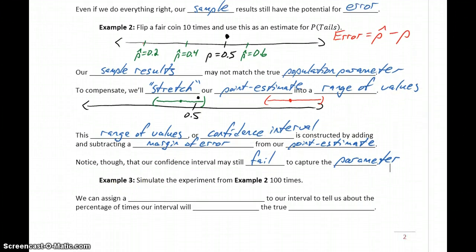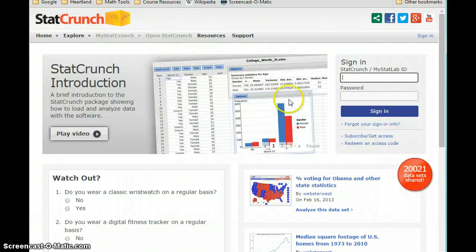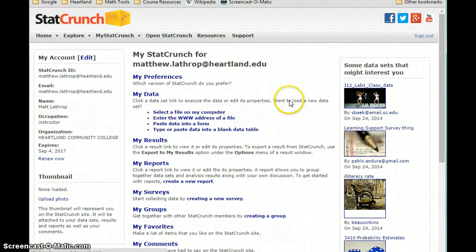In Example 3, we want to simulate this experiment that we just ran in Example 2, but we want to do it 100 different times. So rather than looking at that spreadsheet over and over again, StatCrunch is going to give us a way to do this.